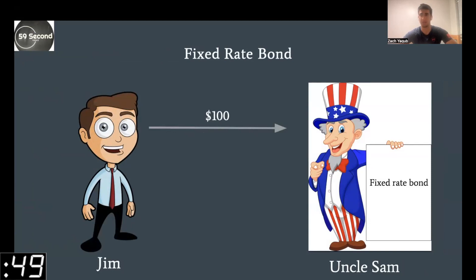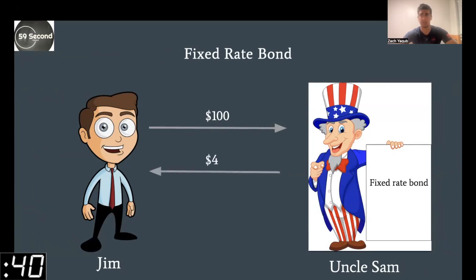Every year, Uncle Sam has agreed to give 4% of the par value back to Jim. This is the coupon rate. In this case, that would mean the coupon payment is $4. He's going to give this every year until the bond completion. The coupon rate doesn't change because this is a fixed rate bond.